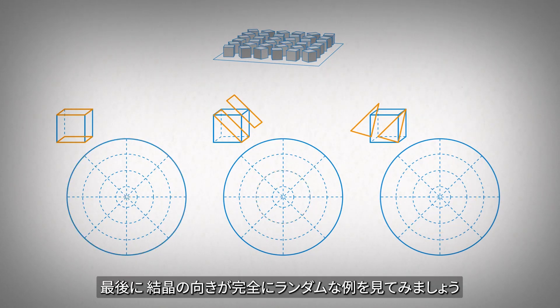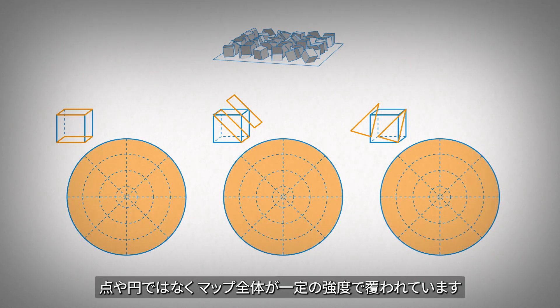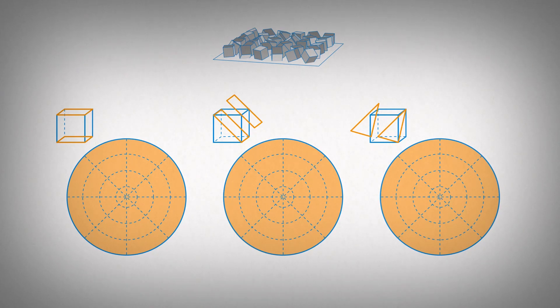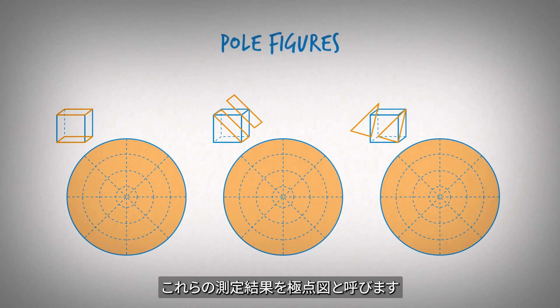One last example to look at is one where the crystals are completely randomly oriented. Instead of spots or circles, the entire map is covered in constant intensity. Each of these plots is a map of a specific atomic plane of the crystal in the sample. These are called pole figures.